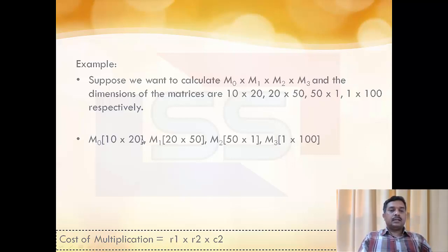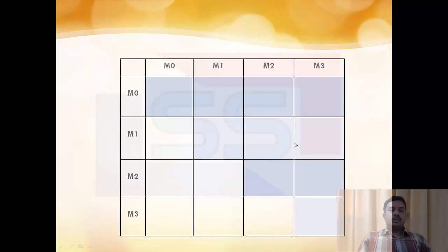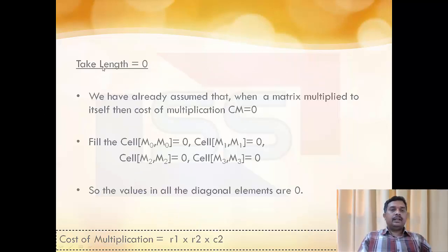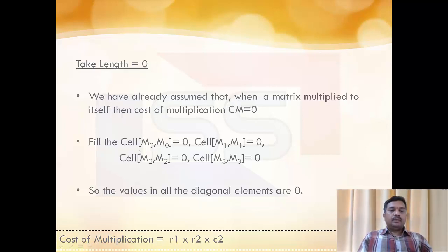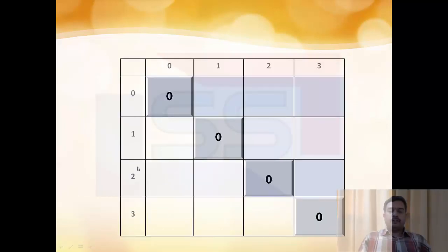Let us see an example. M0 is 10×20, M1 is 20×50, M2 is 50×1, and M3 is 1×100. We will first make a blank table with M0, M1, M2, M3 as headings. For length 0, we know the cost of multiplication becomes 0 when a matrix is multiplied by itself, so all diagonal elements — cells (M0,M0), (M1,M1), (M2,M2), (M3,M3) — are filled with zeros.